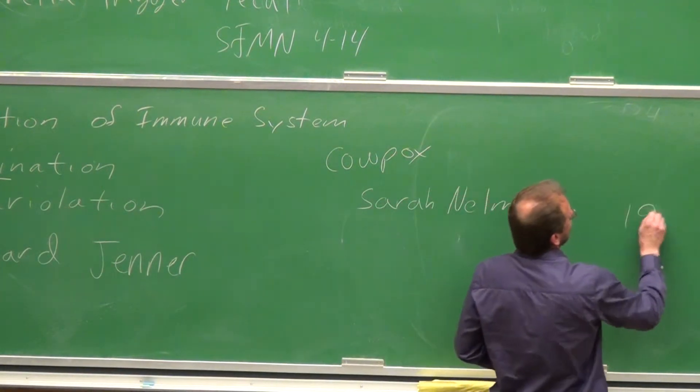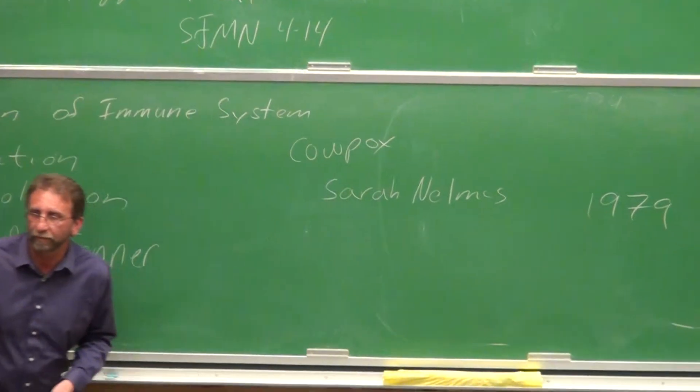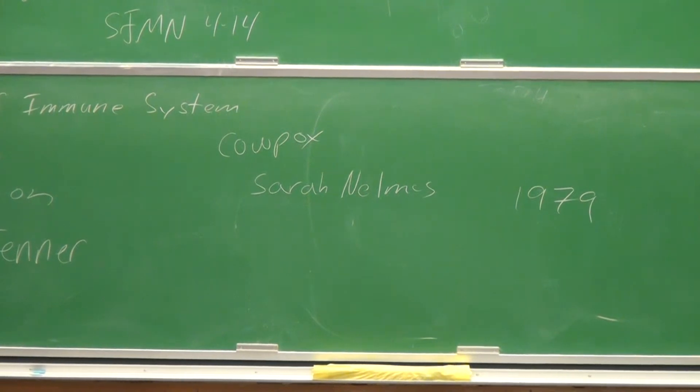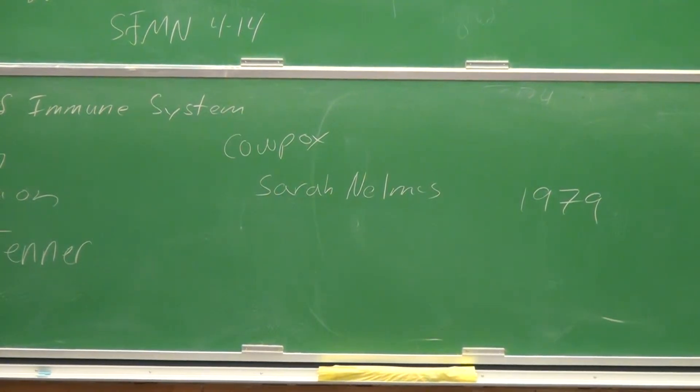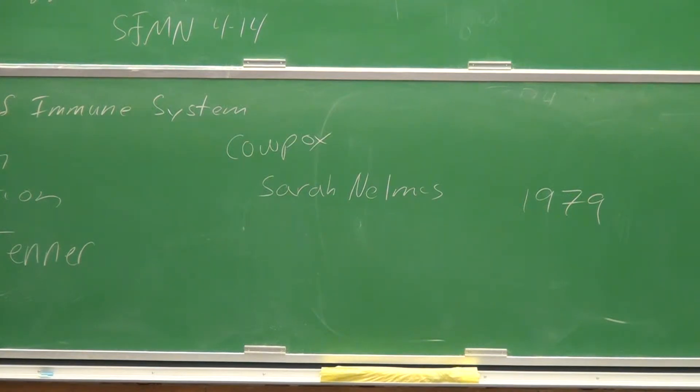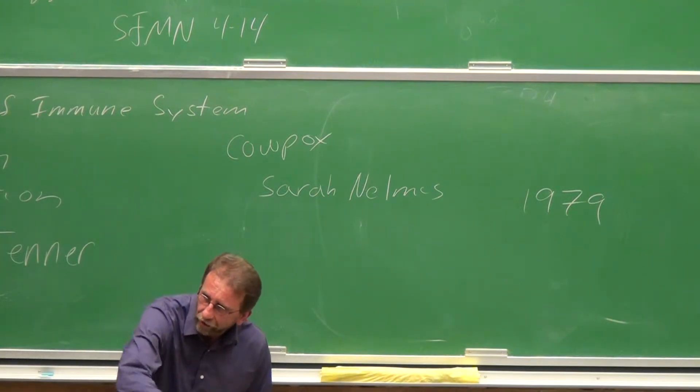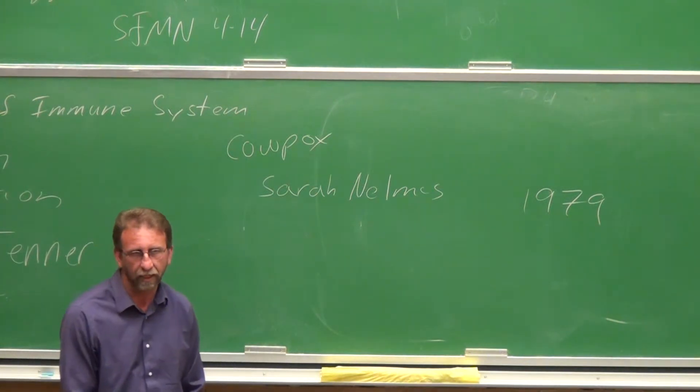In 1979 we eradicated smallpox from the planet. Well not entirely, I'm sure that there are a couple of labs here in the United States and maybe over in Russia where there are strains of smallpox still, but there has not been a human case of smallpox since 1979.